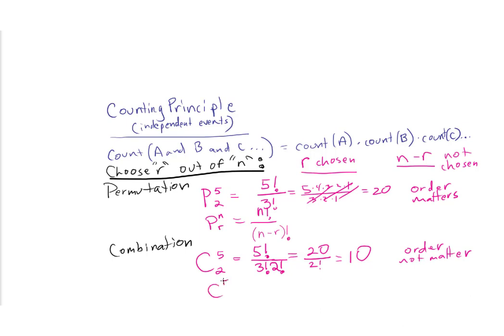In general, combination n choose r equals n factorial over n minus r factorial times r factorial — the same as permutation but with an extra r factorial division. An example: selecting pizza toppings. If I have 5 toppings and need to choose 2, order doesn't matter — mushrooms and pepperoni is the same pizza as pepperoni then mushrooms. So I use combination 5 choose 2, giving 10 ways to choose 2 toppings out of 5.